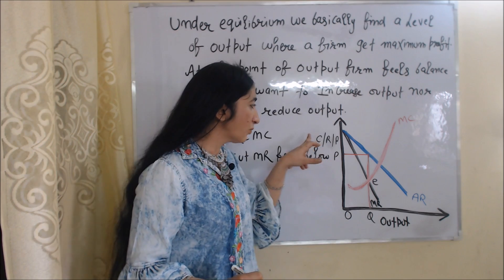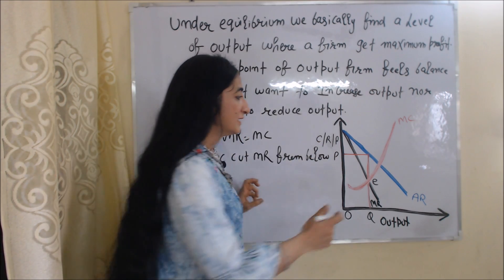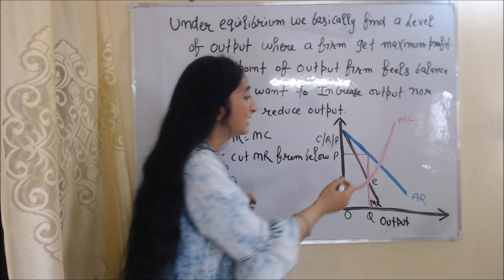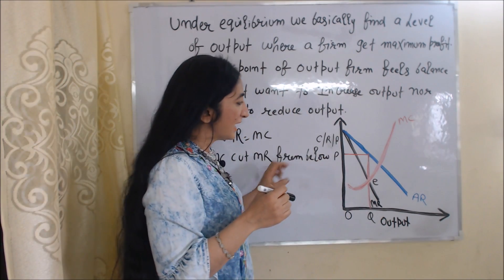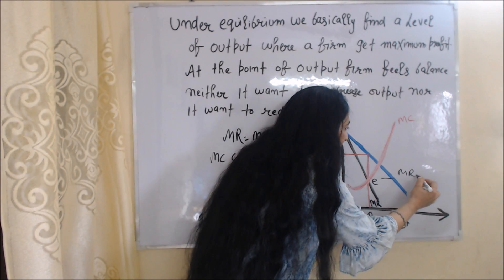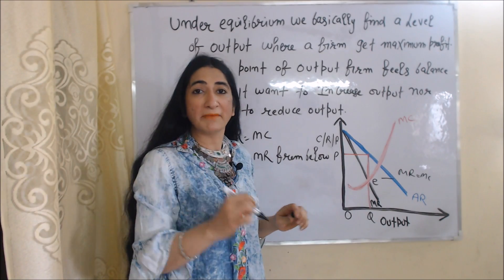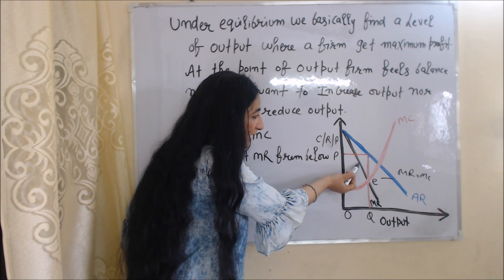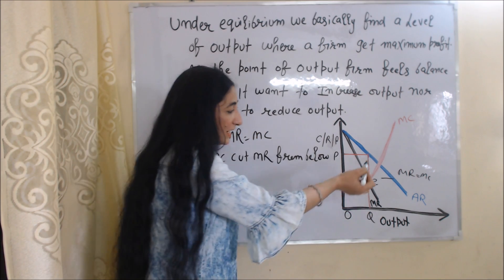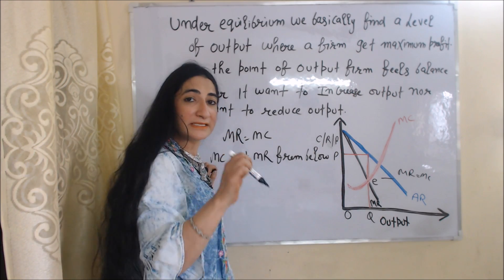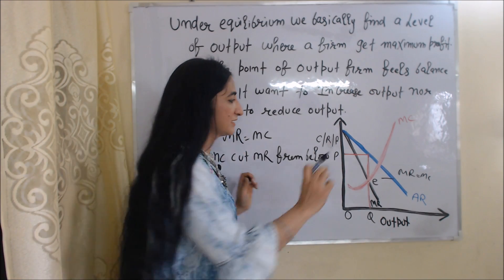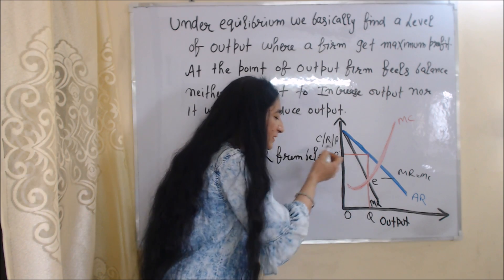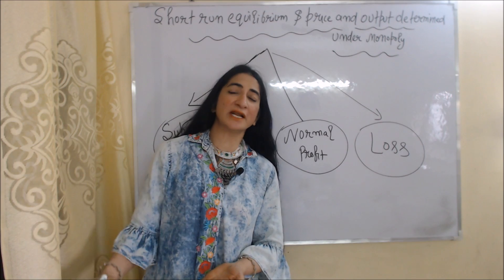In this diagram, the X-axis shows output and Y-axis shows cost, revenue, and price. The blue curve is AR (average revenue), the black one is MR (marginal revenue), and the red one is MC (marginal cost). At point E, MR equals MC and MC cuts MR from below — both conditions are satisfied. So E is our equilibrium point, OQ is equilibrium output, and OP is equilibrium price.